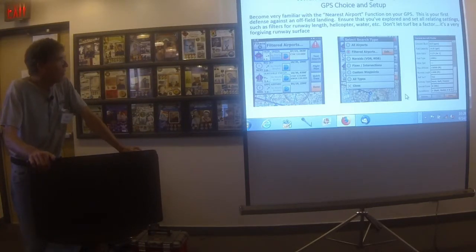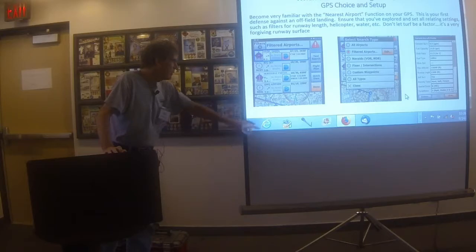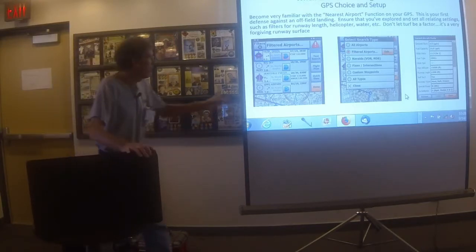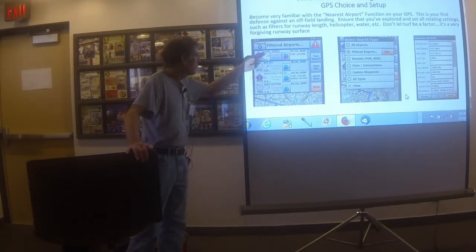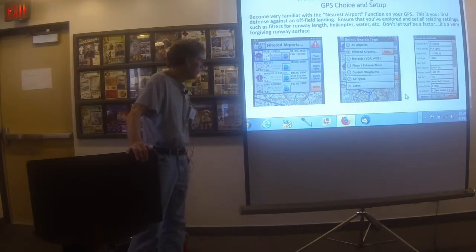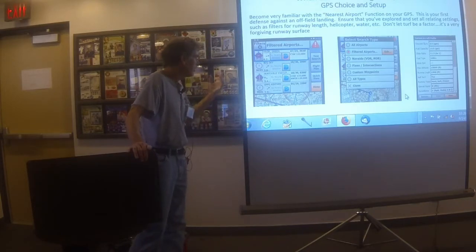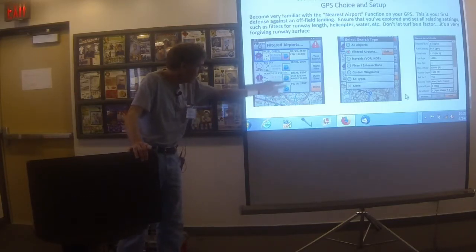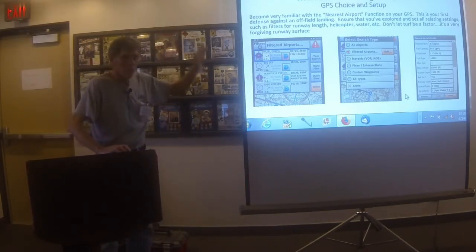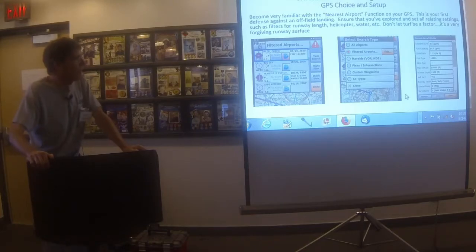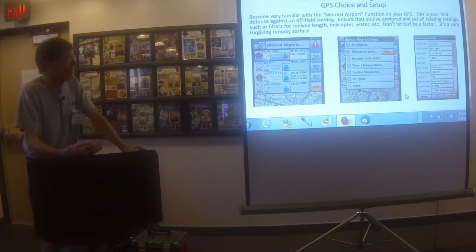Go look at the filters and stuff associated with the range rings and all that. Also, the nearest airports feature is something you need to get real familiar with and make sure it's set up right. This is what it looks like in iFly — hit the nearest button and it shows you the four nearest airports, which direction to turn to get there, how far it is, and how long the runways are.